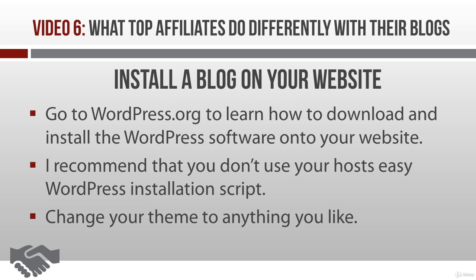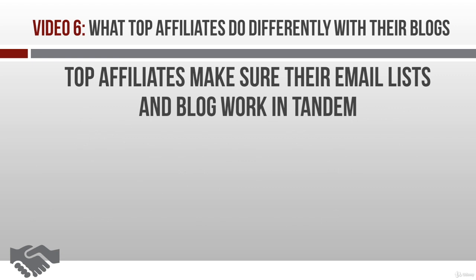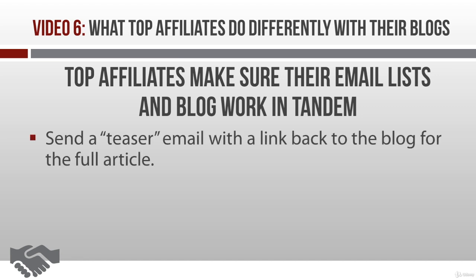Now let's get into the good stuff — what the super affiliates do differently with their blogs. First off, one of the things the top affiliates do is make sure their email lists and blogs work in tandem. One way to do this is to send out a teaser email with a link to the blog to read the rest of the article.